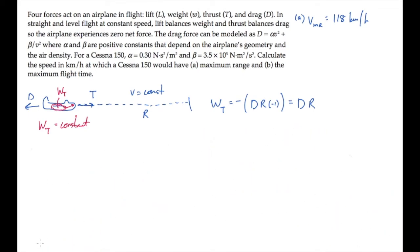We'll start doing this by writing down the expression for the power, the work done per unit time. We know the work done by the thrust is the drag force times the range R. So we can maximize the flight time delta T by minimizing the power.